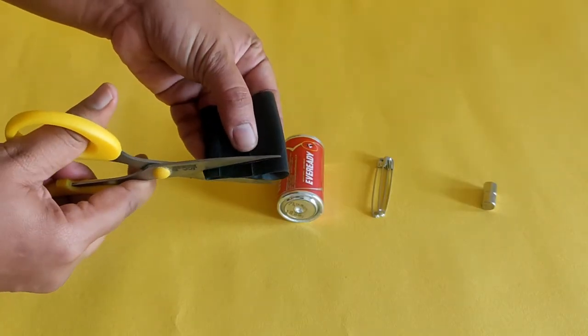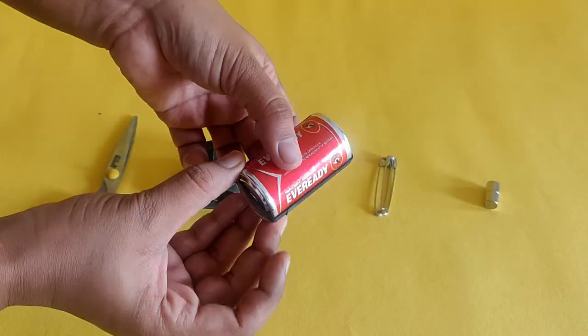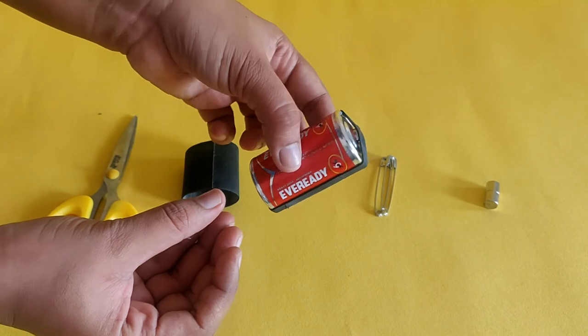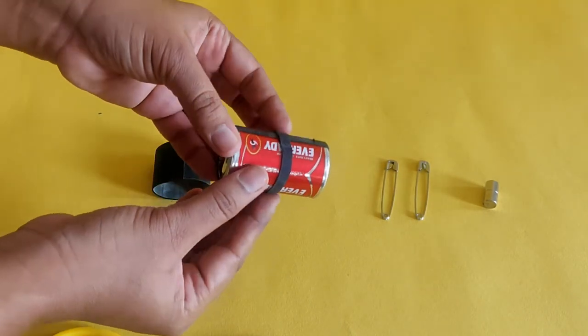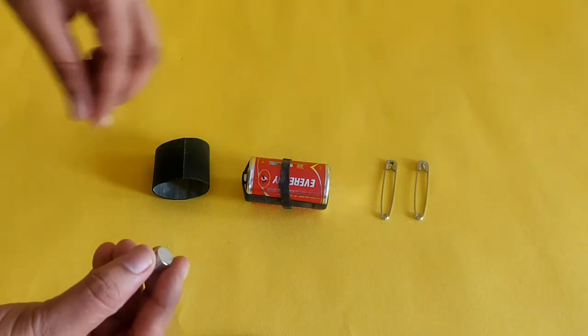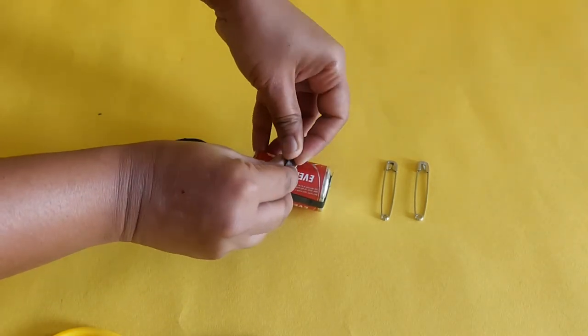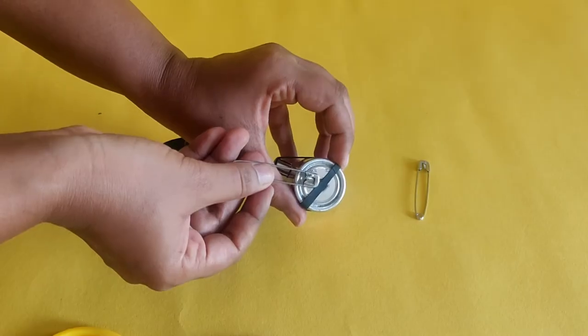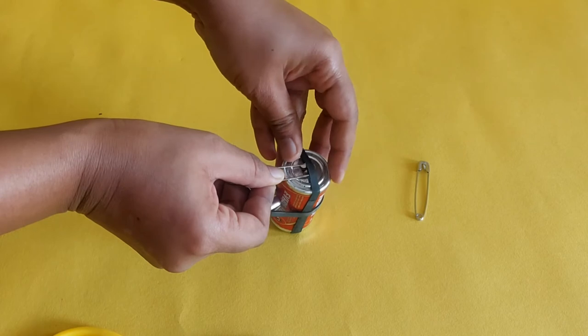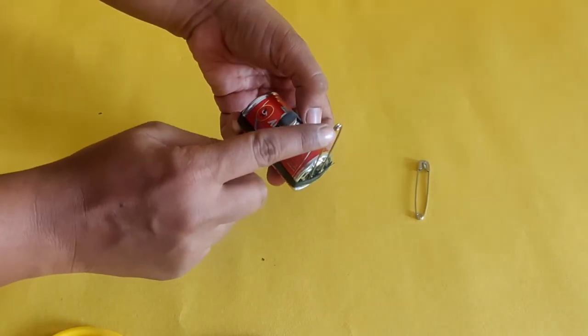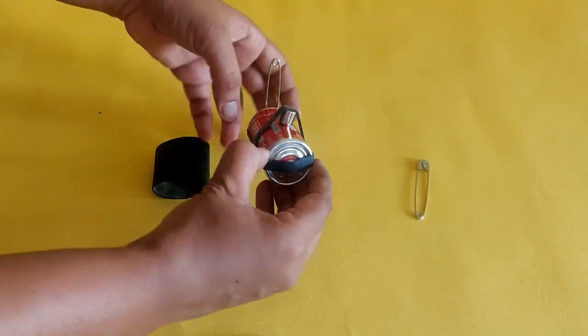Cut the cycle tube into bands. Stretch the bands around the battery as shown. Use the cycle tube band to firmly attach the magnet to the battery. Attach the two safety pins to the battery terminals using the other cycle tube band. Ensure the loops of the safety pin are on the top.